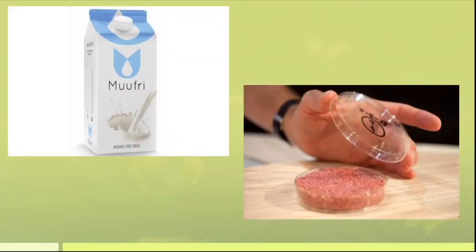Additionally, by modifying the genes of yeast cells to make them produce milk, or a substance that looks and tastes exactly like milk, the process becomes 10 to 100 times more energy efficient, as the cow loses more than 99% of the energy when converting grass energy into milk.